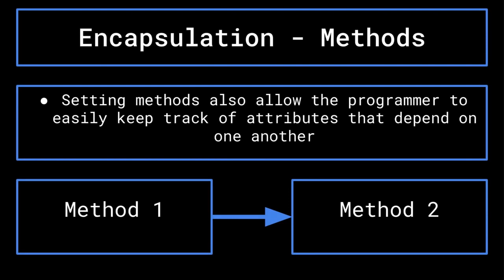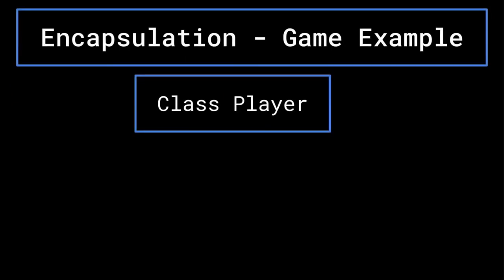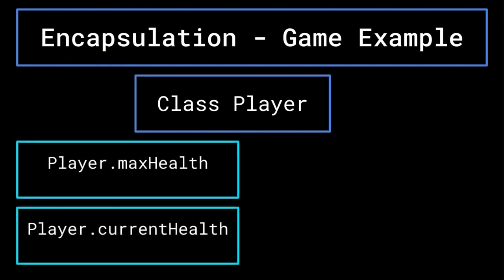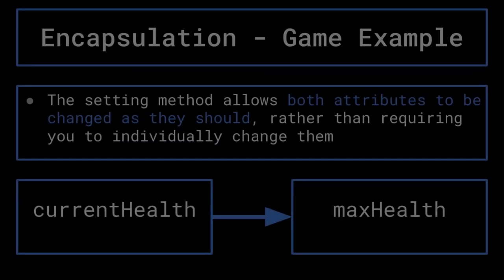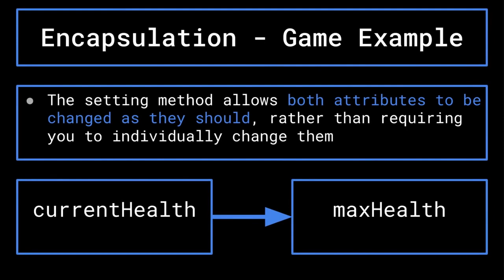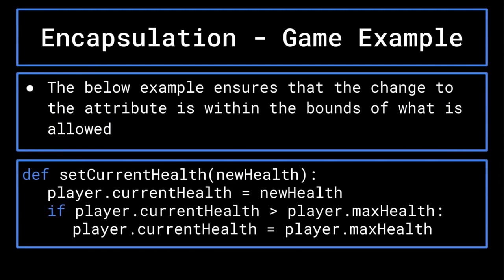For example, if I was programming a game, I may have two different attributes for the player's health: max health and current health. When the character levels up, I may have their max health increase as well. When this happens, I would want the current health to be set to the maximum health. Instead of changing both of these values directly, I can define the set max health method such that the current health is also set to the maximum health once the maximum health has increased. Furthermore, these setting methods allow values to be validated.